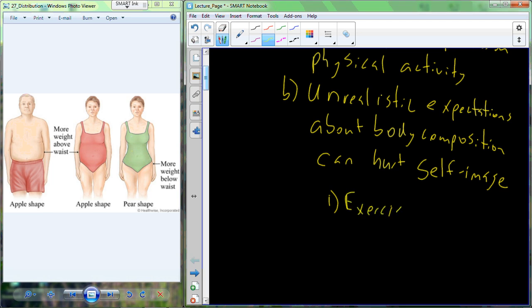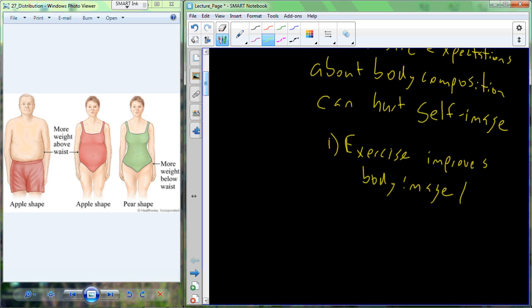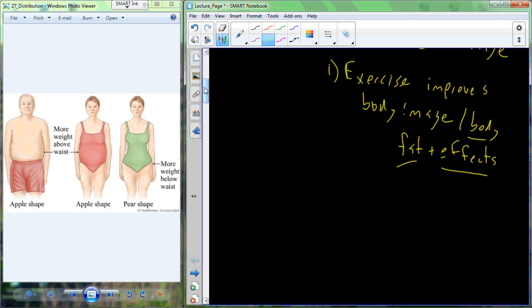One of the ways in which we can deal with a lower or a negative self-image is through exercise. Exercise does improve body image. Exercise also improves body fat and its effects. So exercise becomes really important. We've already discussed some of the ways in which we can incorporate different types of exercise: cardiovascular endurance type training, muscle strength, muscle endurance, and flexibility. Body composition can also be trained. So you can undergo a training program to improve your body composition, to defend against those disease risks that we've talked about, to improve your overall self-image.